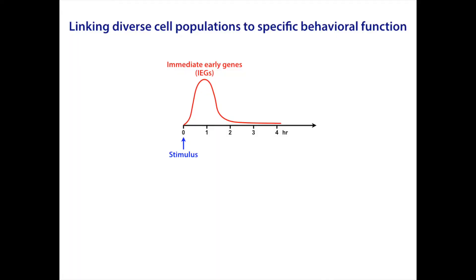It has been known for a long time that the expression of immediate early genes, or IEGs, could be rapidly and transiently induced by various cellular stimuli, including synaptic activity. Thus, the expression of IEGs has been widely used to map neural activation patterns and to functionally label an ensemble of activated neurons.